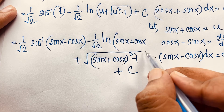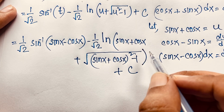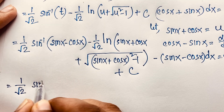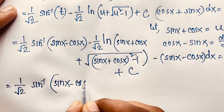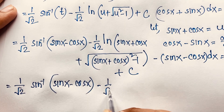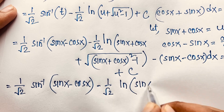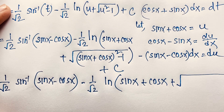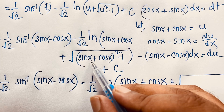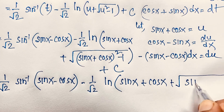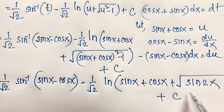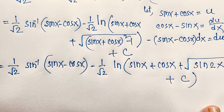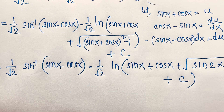This is our final answer to this viral integral math question. Evaluating the expression further, since (sin x + cos x)² − 1 = sin 2x, we can write the answer as: 1 over square root 2 times sin⁻¹(sin x − cos x) minus 1 over square root 2 times ln|sin x + cos x + square root(sin 2x)| + C. Thank you all — if you enjoyed this math problem, please subscribe to my channel for more interesting videos. Goodbye, take care!